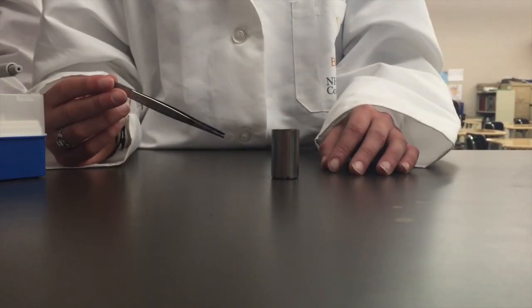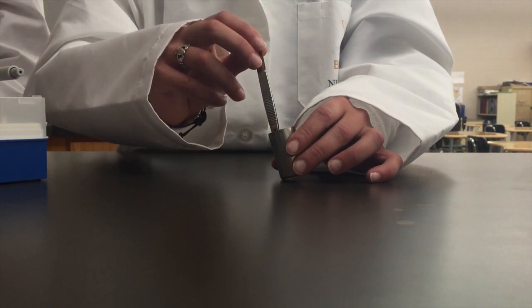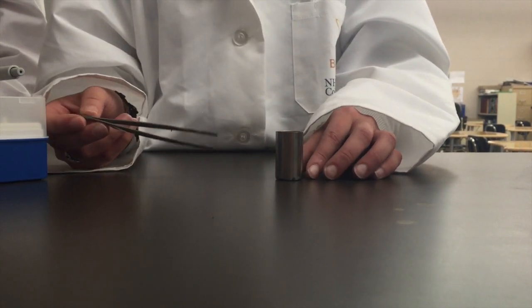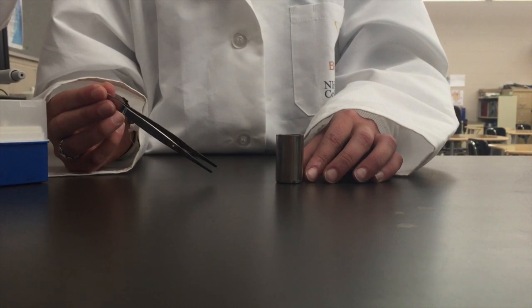Put the previously sterilized forceps into the media inside of the cap. You might hear a sizzle. This is normal and it indicates that the forceps are still very hot from being put in the flame. If this occurs, do not touch the bead because the heat from the forceps will kill the bacteria on the bead.